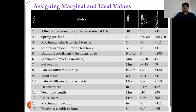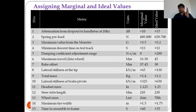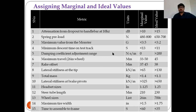This is called assigning marginal and ideal values. Based on the comparison table of three products against metrics, you determine which is the marginal value and which is the ideal value, aiming for the ideal while ensuring you at least surpass the marginal. For the suspension system, example target values include: attenuation from dropout to handlebar greater than 15, spring preload between 650 to 700, maximum value from master less than 3.2, minimum descent time on test track less than 11, and damping coefficient greater than 200.